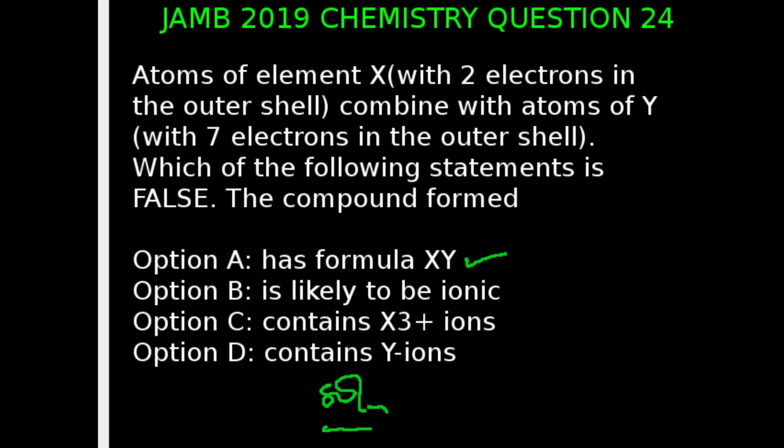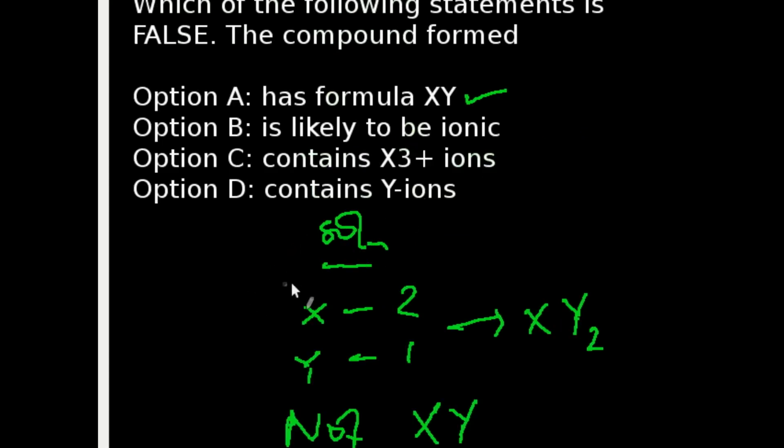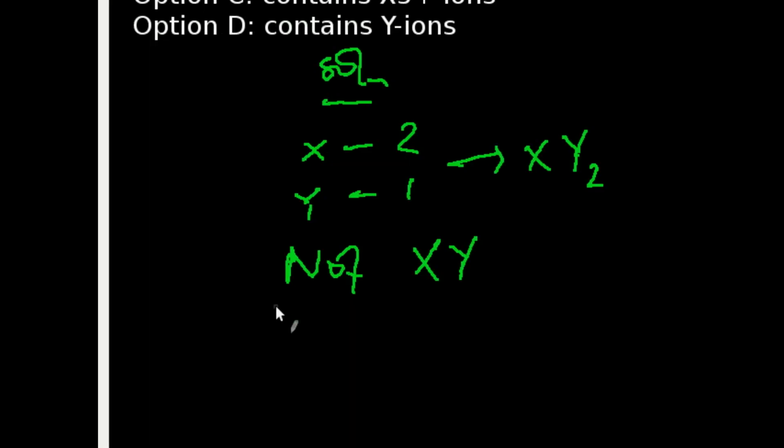Question 24 of JAMB 2019 Chemistry Examination. Atoms of element X with 2 electrons in the outer shell combined with atoms of Y with 7 electrons in the outer shell. Which of the following statements is false? The compound that would be formed would simply be a combination of X and Y. So if we do a possible crossing of X and Y, we're going to be having X₂Y₁.